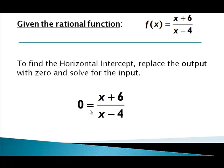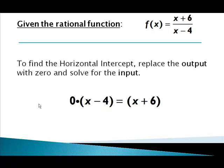Now to solve this for x you could cross multiply. We could do zero times the quantity x minus four and we can do x plus six times one. It would look something like this: zero times the quantity x minus four and one times x plus six.